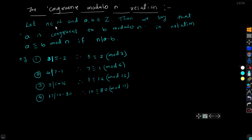Let n belong to N, that is n is a natural number, and take two integers a, b belonging to Z. Then we say that a is congruent to b modulo n — denoted a ≡ b (mod n) — if and only if n divides a minus b, or equivalently a minus b is divisible by n.